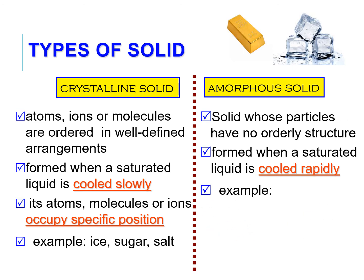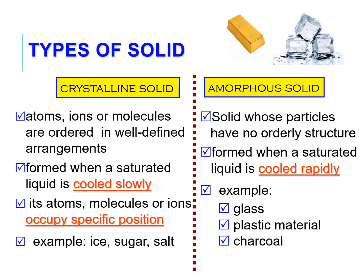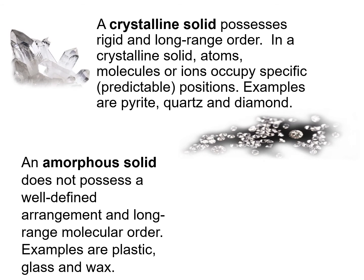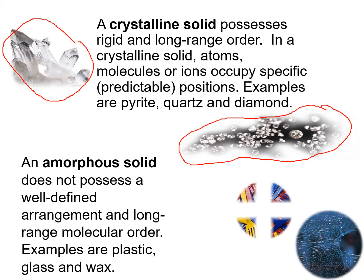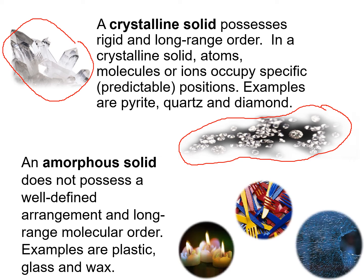But amorphous solid doesn't have a specific position, and examples are glass, plastic material, and charcoal. Look at this picture showing diamonds, a crystalline solid possessing a rigid and long-range order. In a crystalline solid, atoms, molecules, or ions occupy specific predictable positions. But an amorphous solid — for example, you can see here the glass, the plastic fork, and wax.